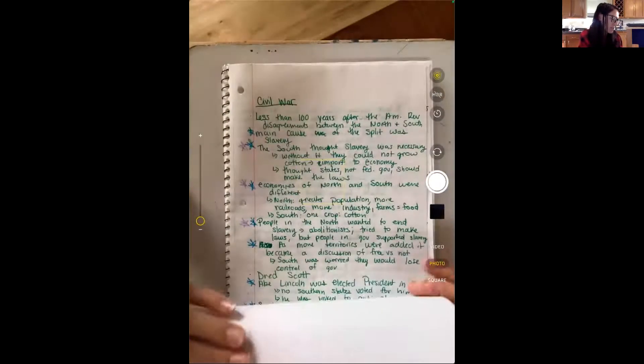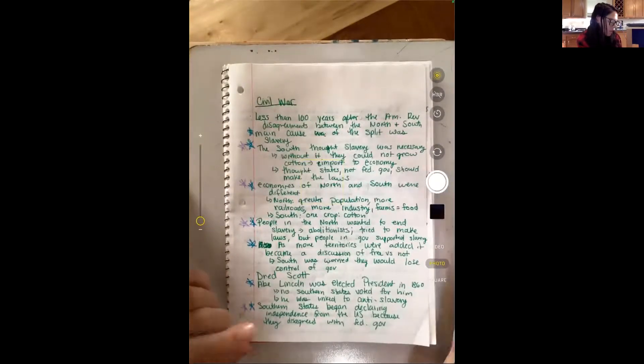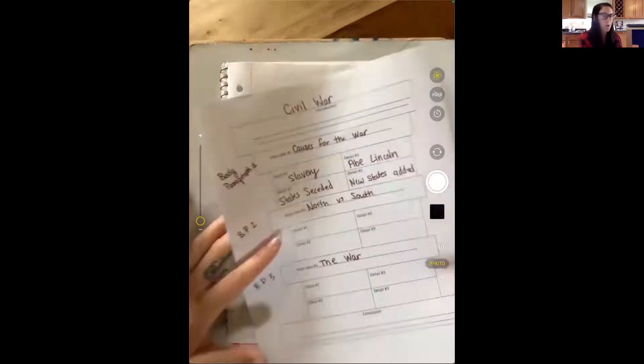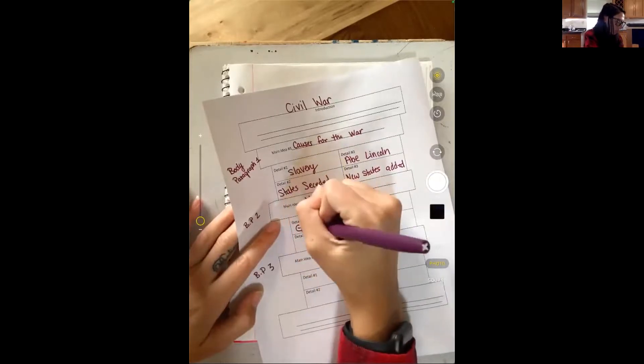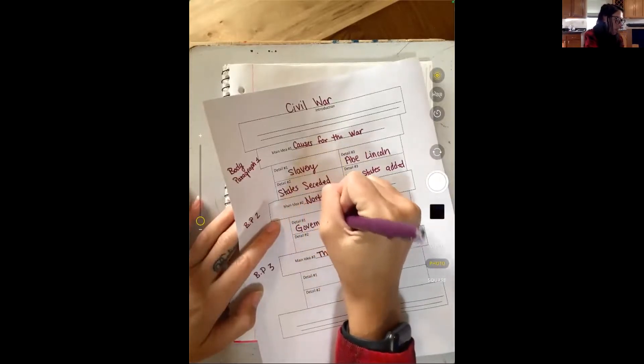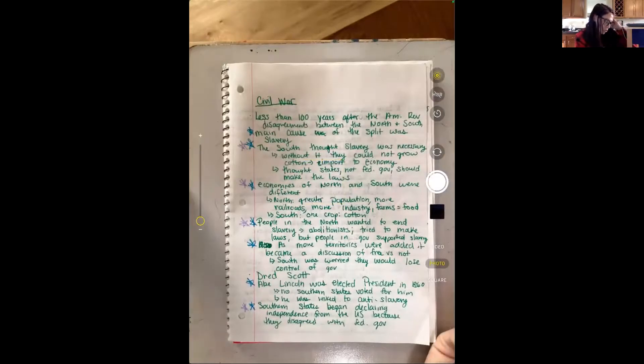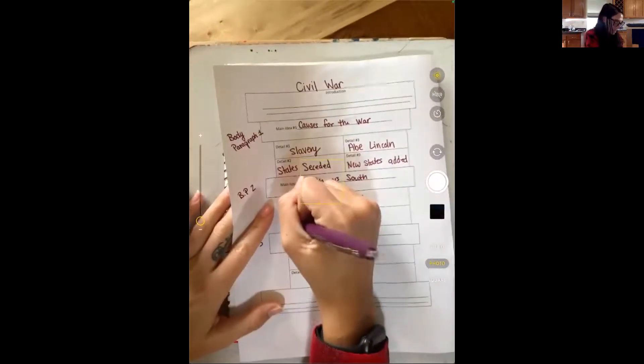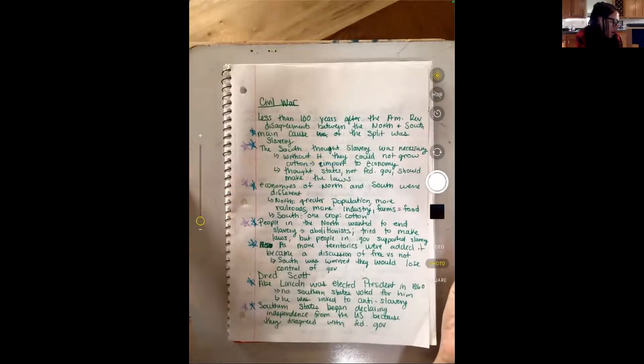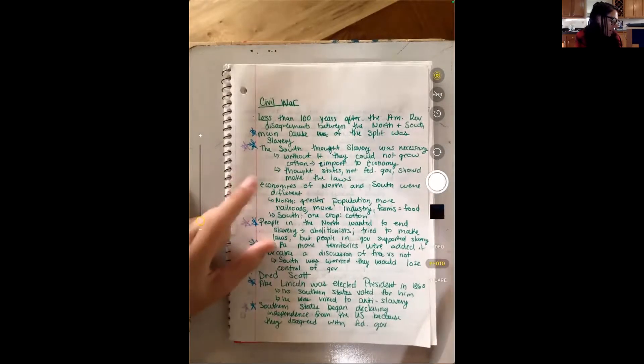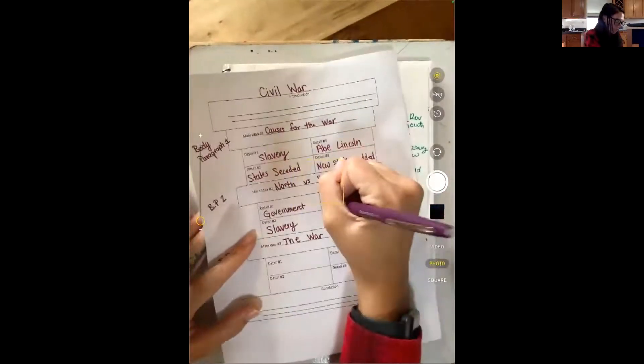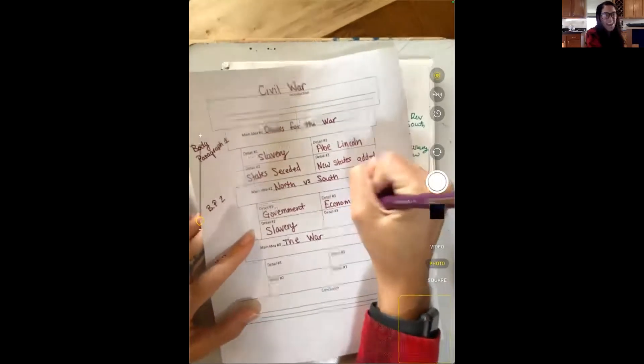Then I'm going to go to North versus South. And so I'm going to think of what were they opposed about. So one thing that they were opposed about was how the government ran. The South didn't want the federal government in their business. They wanted the States to be able to pick their laws. And then a big difference in their opinion was on slavery. Another big thing was the economy were different. So that's how they made money.